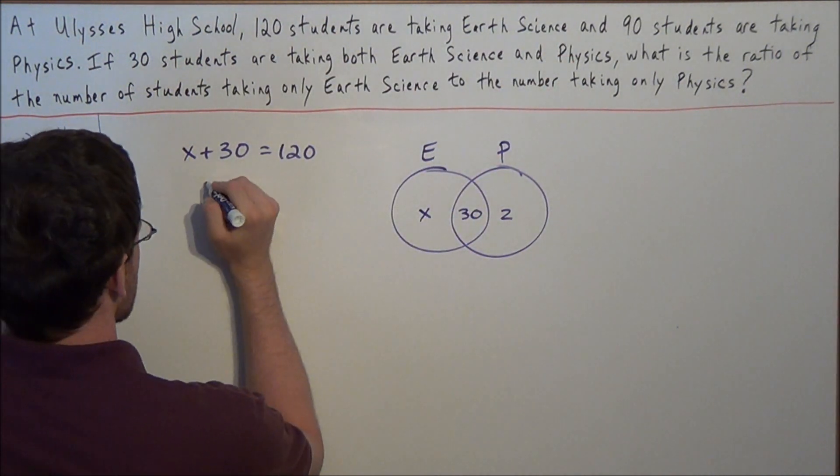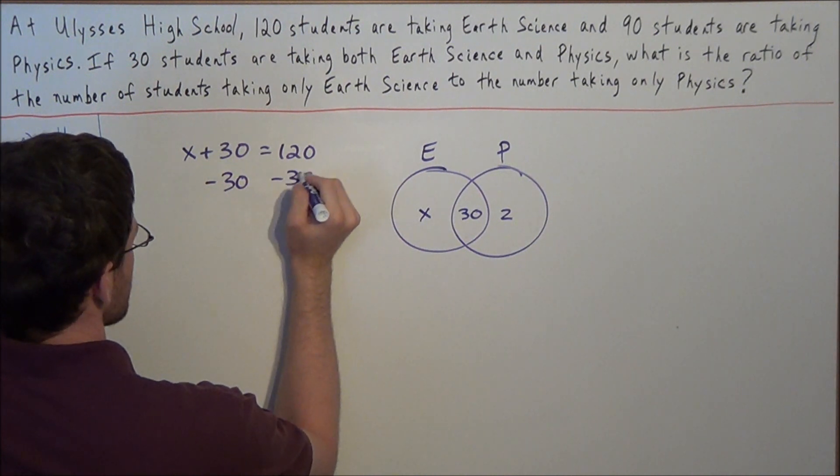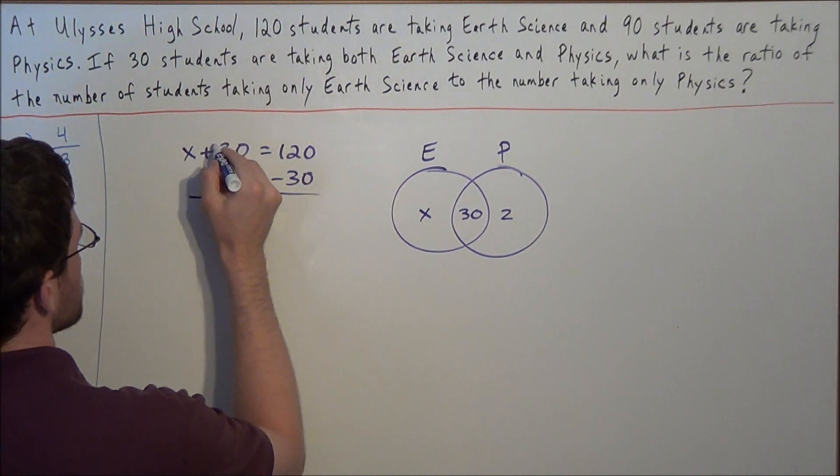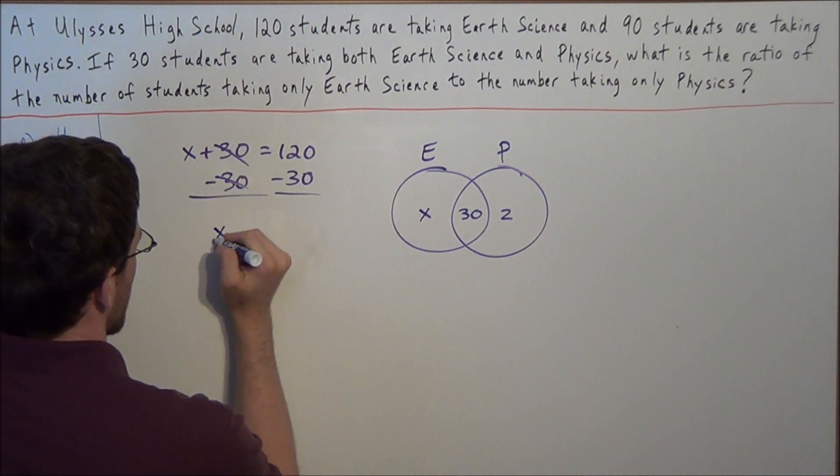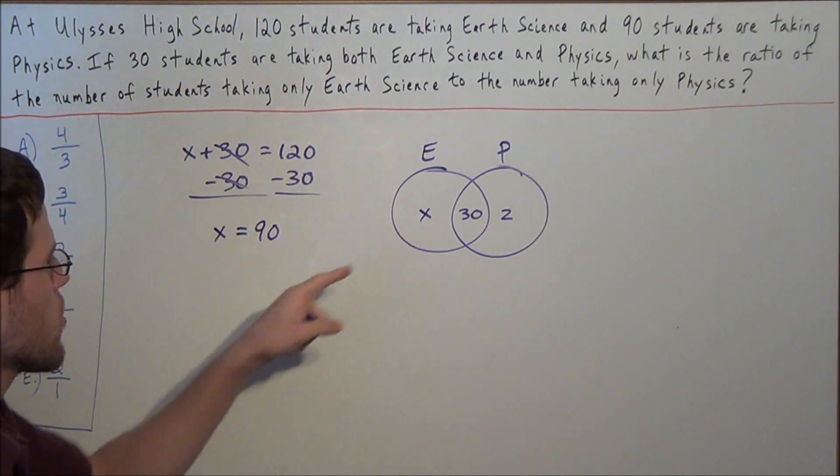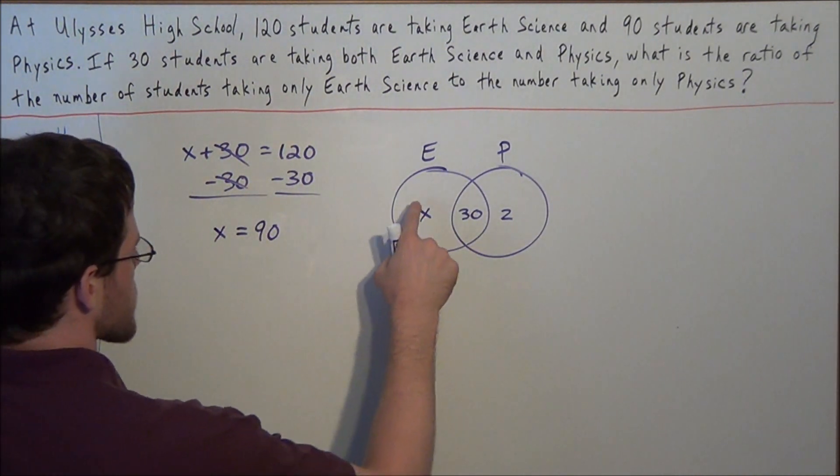And now 30 minus 30 will cancel, and we have X is equal to 90. So now we can go to our Venn diagram, and we can replace X with 90.